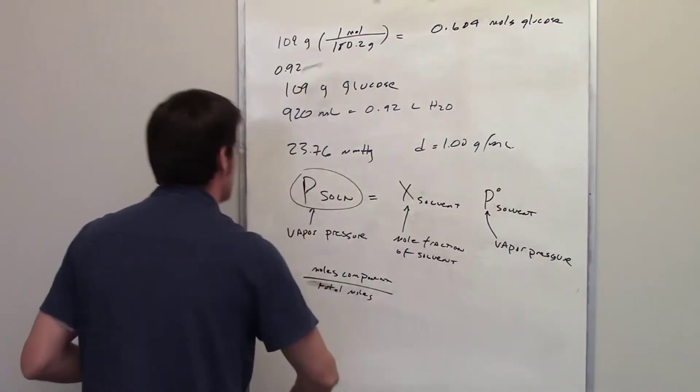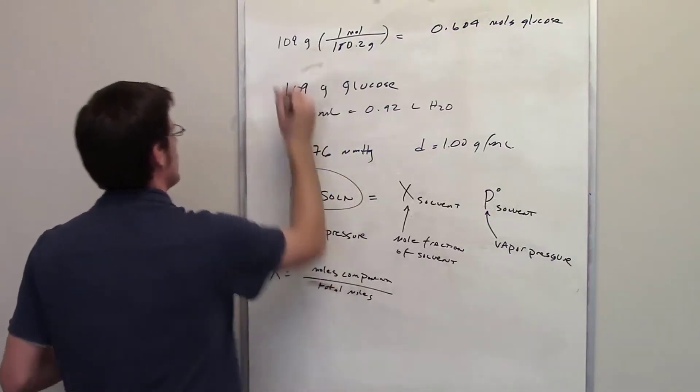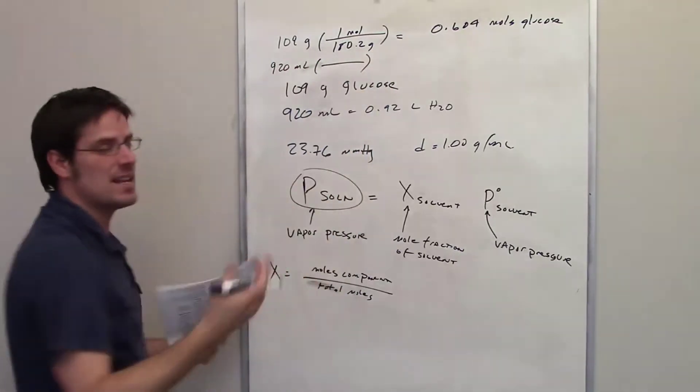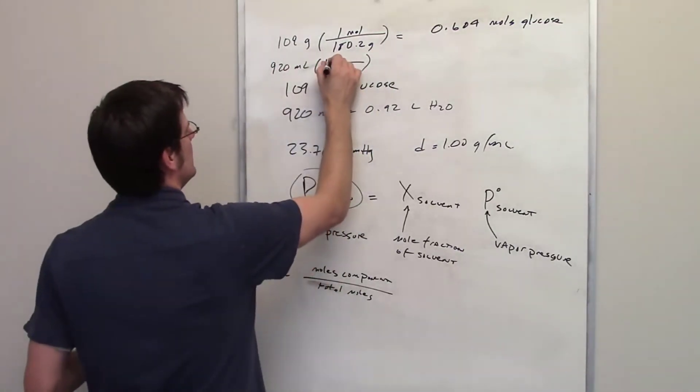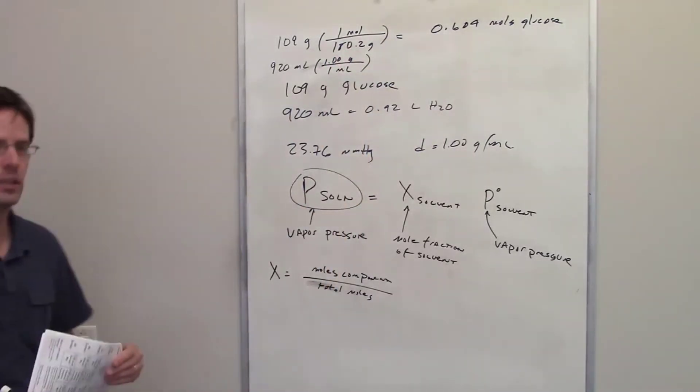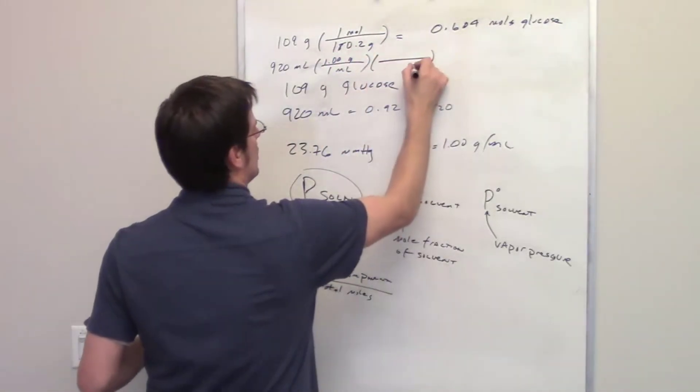Now that I think about it, it might be better to keep this as 920 milliliters in this case. So 920 milliliters of water, it gives us the density of water as being 1 gram in 1 milliliter. Then we throw in grams and moles.